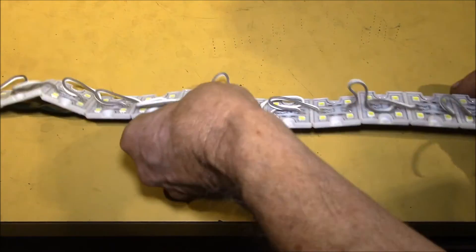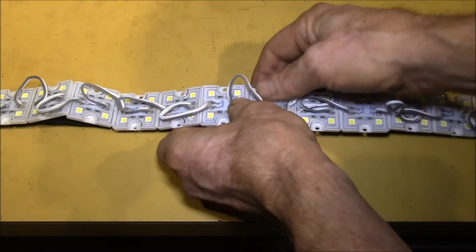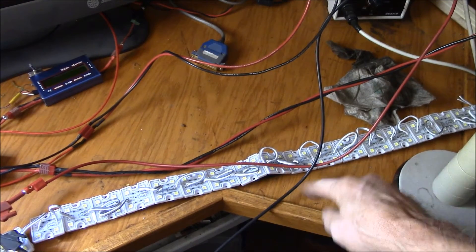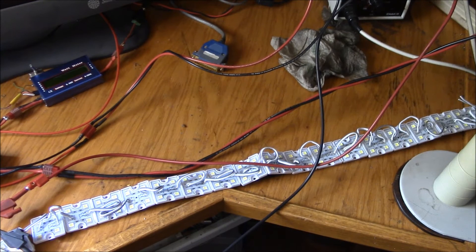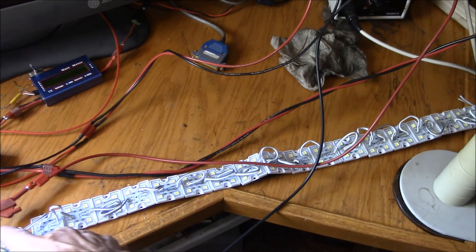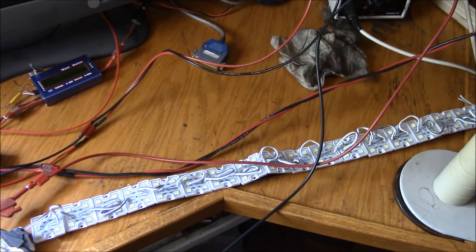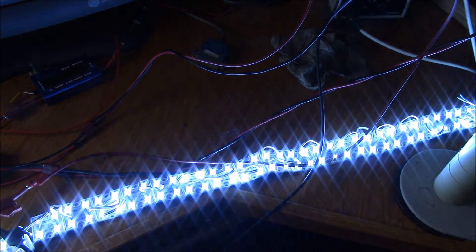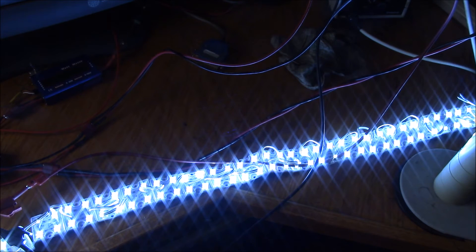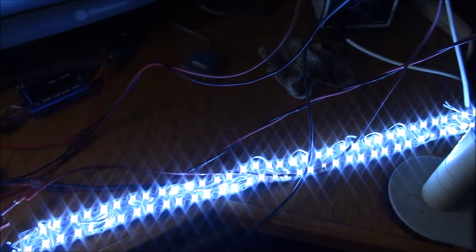Here I've got the light strip on my bench. Let's see what it looks like. White is negative, gray wire is positive. There we go, pretty good brightness there. It's 1.8 amps at 12 volts looking at the power supply.